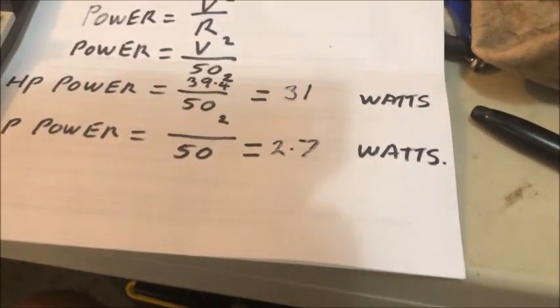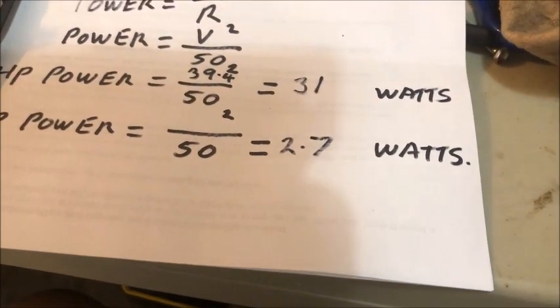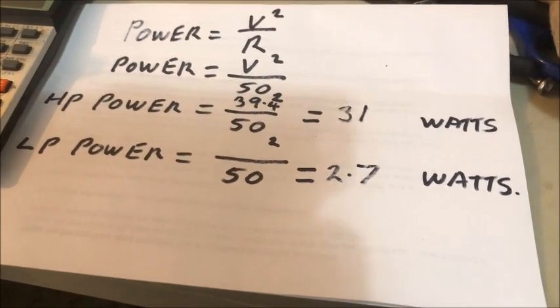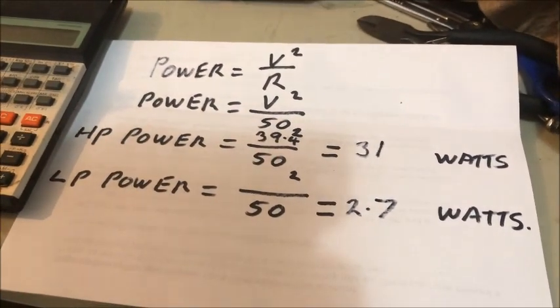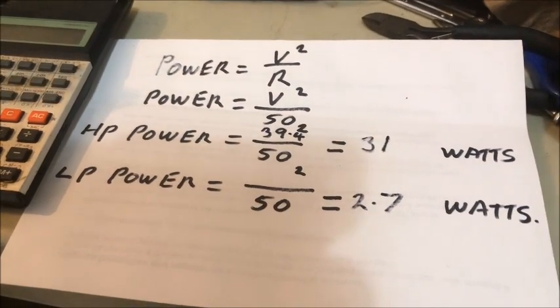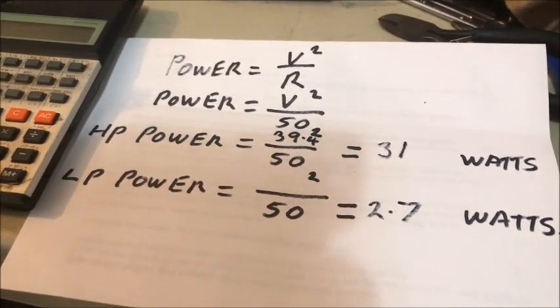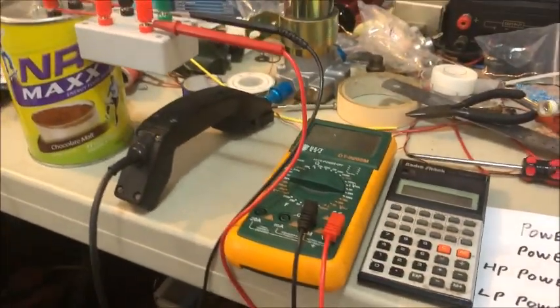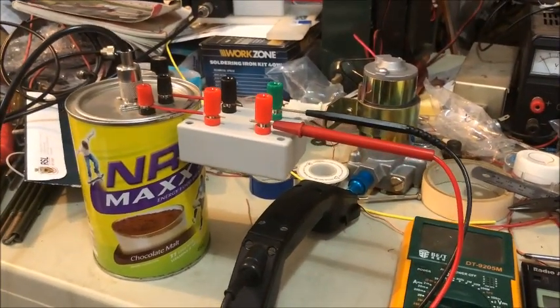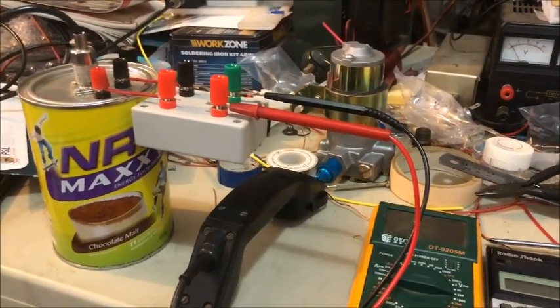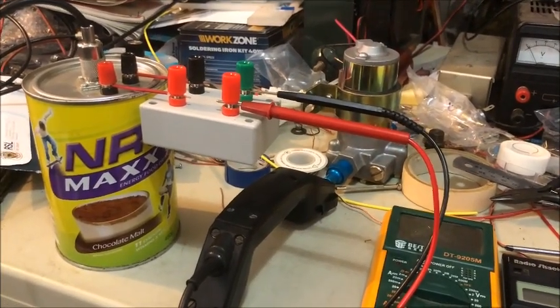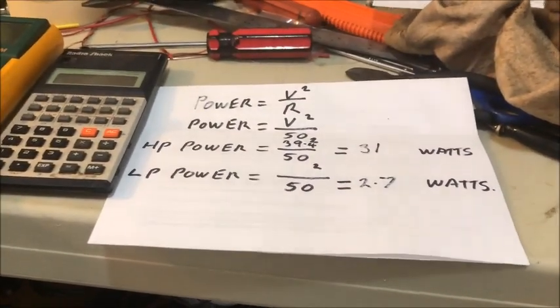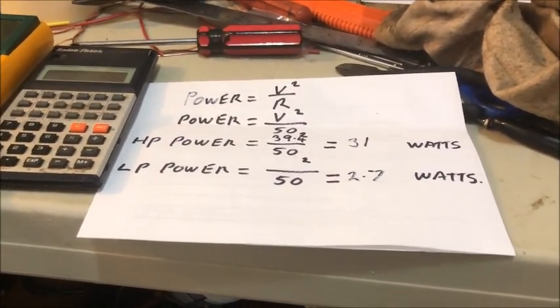Well, there you go. Pretty happy with that. Not only is the radio putting out the specified power, but my little measuring device here is giving me exactly what the specifications of the radio are. So there you go. A very simple method for calculating your transmitter output using your 50 ohm dummy load, a few common electronic components, a multimeter, a calculator, and a formula. And there you have it.